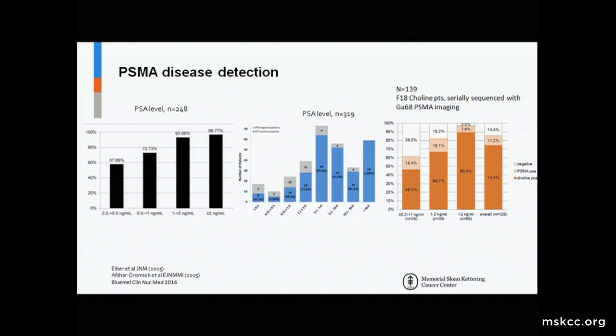Similar results were found in another study of 319 patients, again showing about 50% detection at very low PSA levels. Comparing head-to-head F18 choline and gallium-68 PSMA imaging, patients who got the choline scan had some lesions picked up by both scans, but there was about a 15% increment in disease detected using PSMA-based imaging even at very low PSA levels. Our lead candidate right now globally is PSMA-based imaging. Whether F18 or gallium-68 is somewhat controversial, but in the U.S., in the land of the blind, the one-eyed man is king — we are blind right now relative to other countries in terms of early detection of metastatic disease.